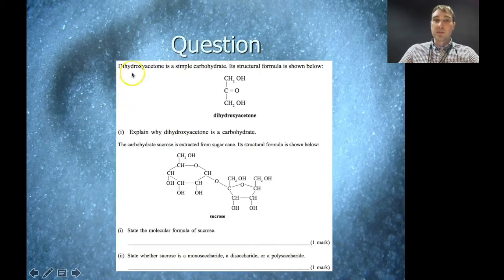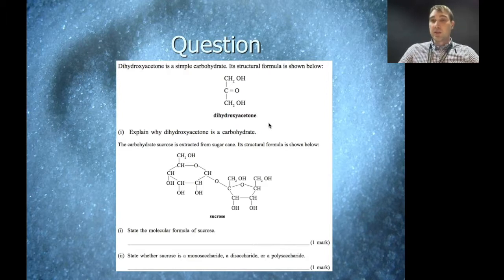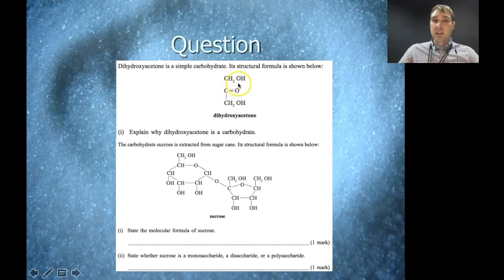Let's have a look at some questions. This question says dihydroxyacetone is a simple carbohydrate — explain why. To be a carbohydrate, a substance needs to be a polyhydroxy aldehyde, polyhydroxy ketone, or a substance that produces these on hydrolysis. In this case, we have a ketone group in the middle of the carbon chain, and two hydroxyl groups — more than one, making it poly. So this is a polyhydroxy ketone, and that's why it's a carbohydrate.